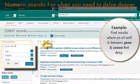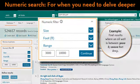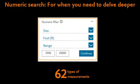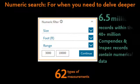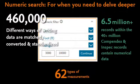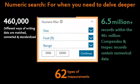In summary, numeric search is there for when you need to delve deeper, from a selection of 62 different physical and chemical properties, and with over 6.5 million records available for cross-searching within the Compendex and Inspect databases, and where 460,000 different ways of writing numerical data are matched, converted, and standardized — all in one easy-to-use search filter that allows you to search using the unit of your choice while also incorporating range searching.